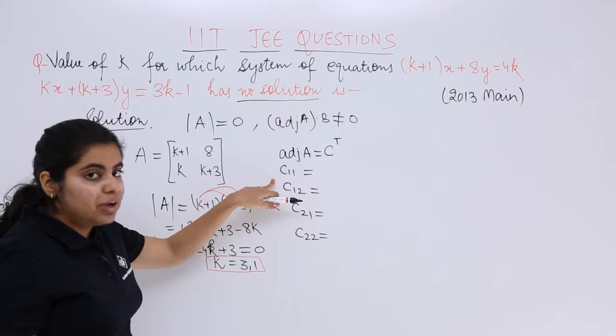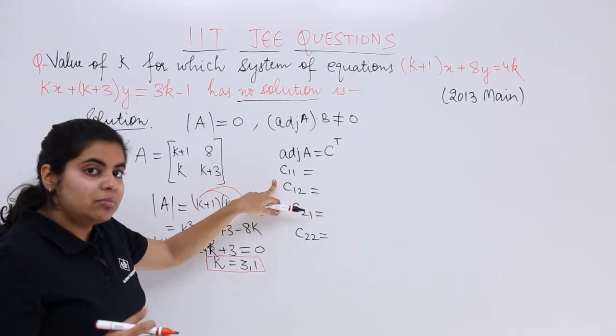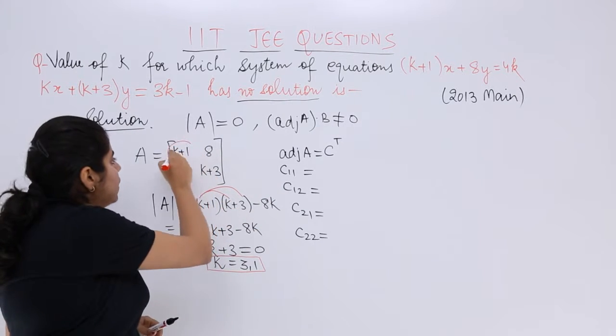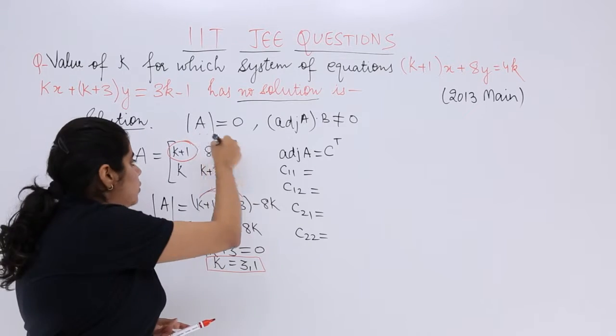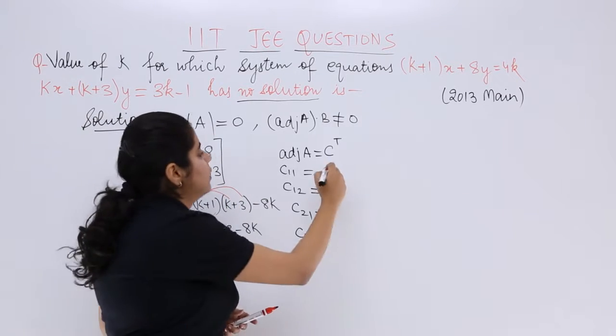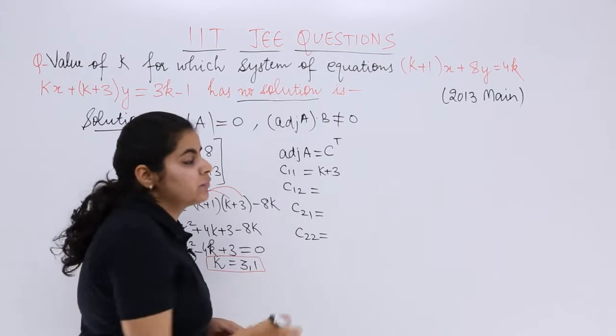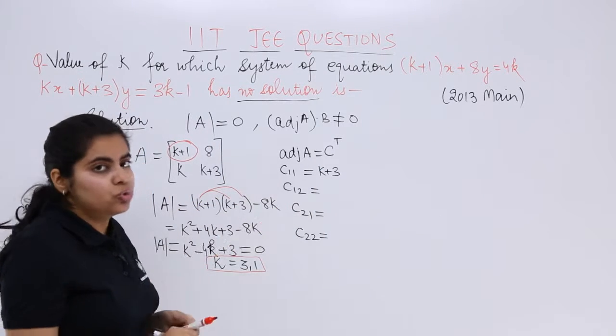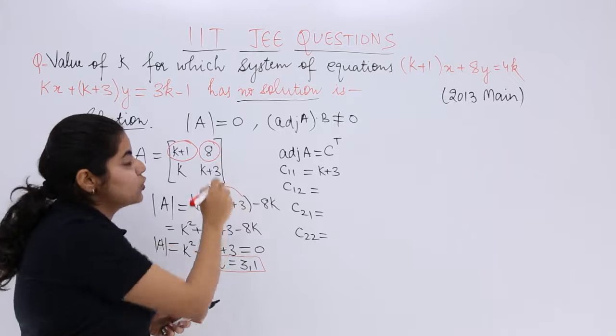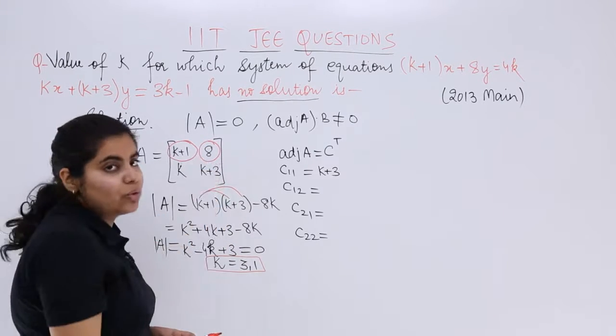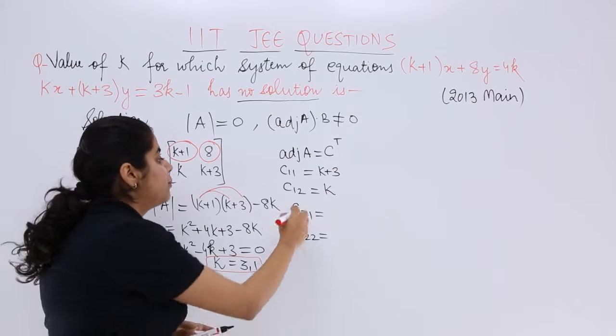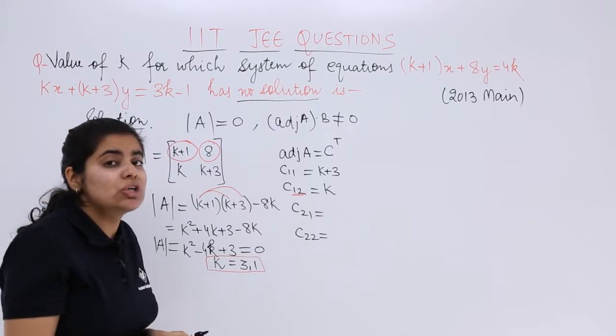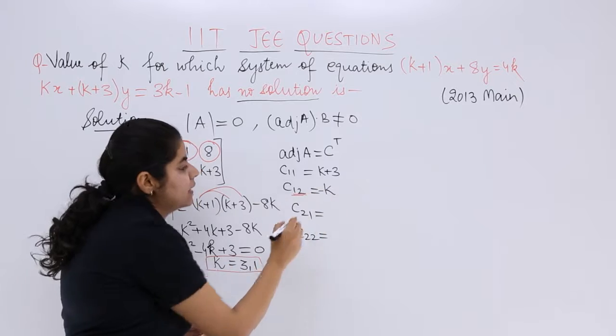c₁₁ is the cofactor of k+1. Ignore the first row and first column, you have k+3. c₁₂ is the cofactor of first row, second column element. Ignore this row and column, you get k. One more thing: 1+2=3 which is odd, so make it minus k.